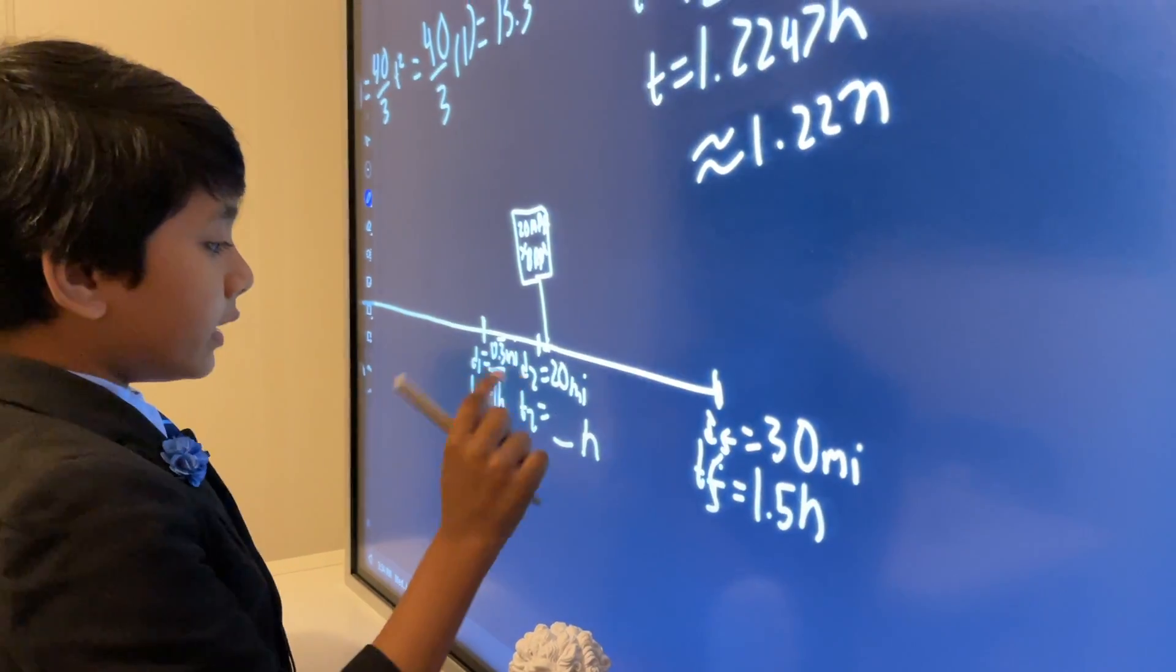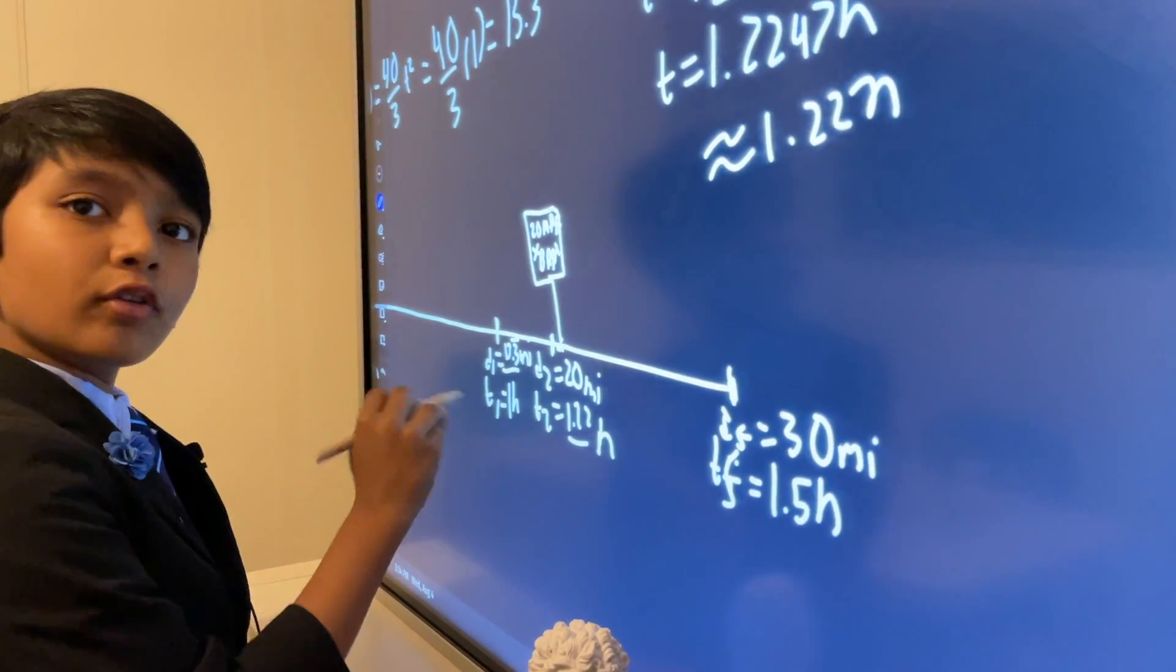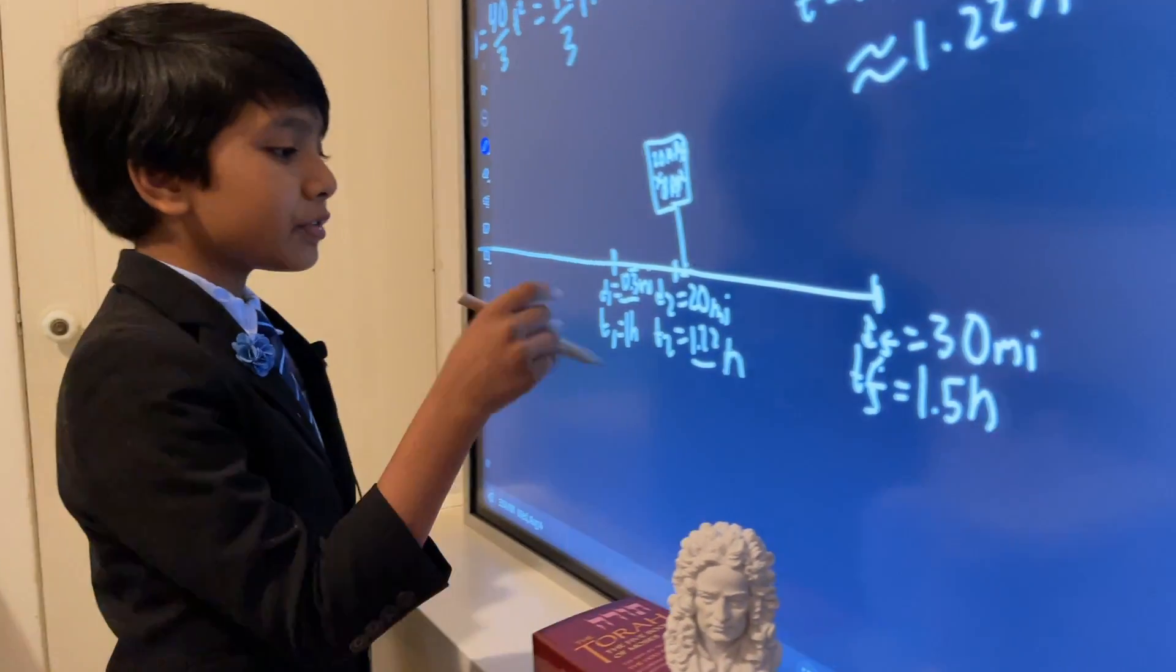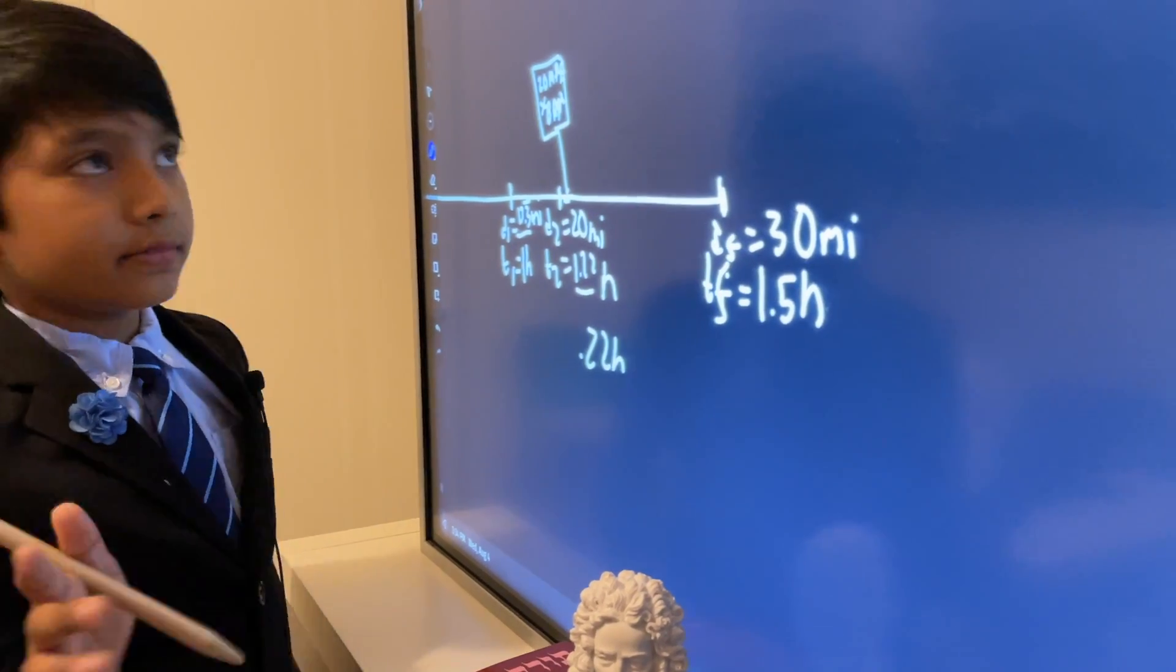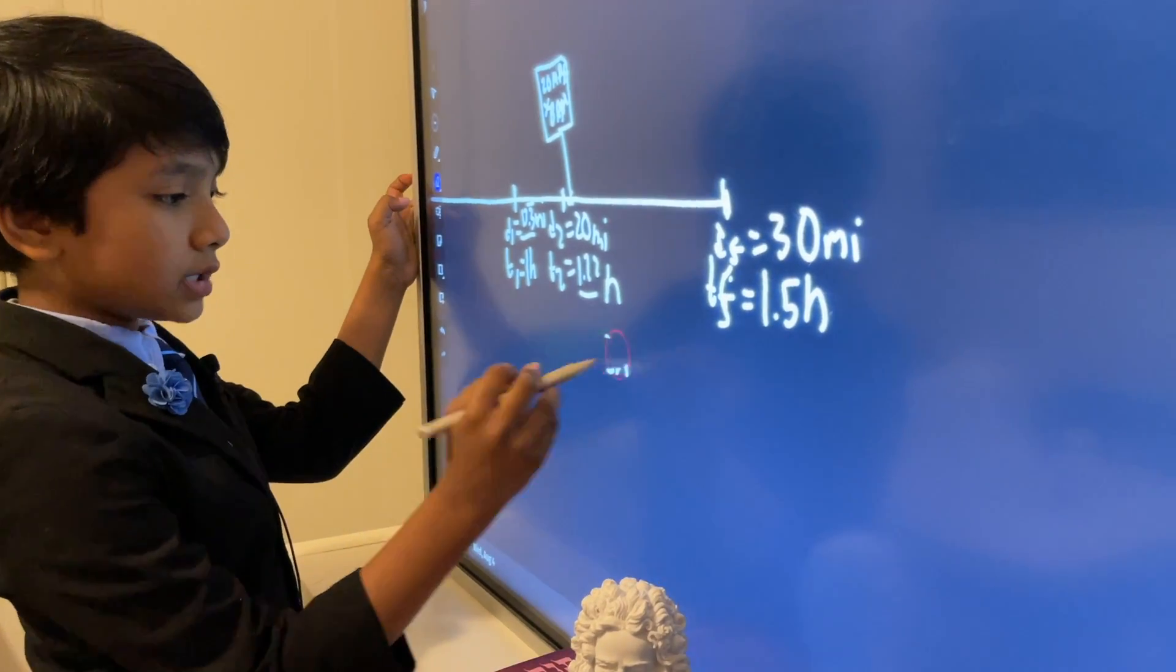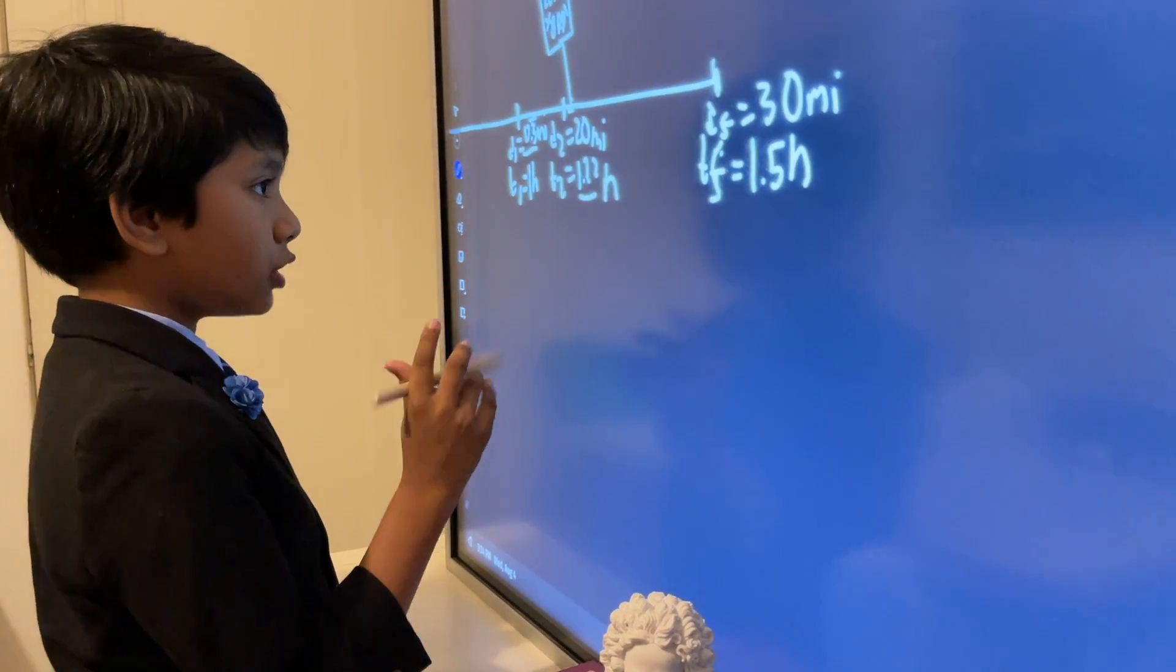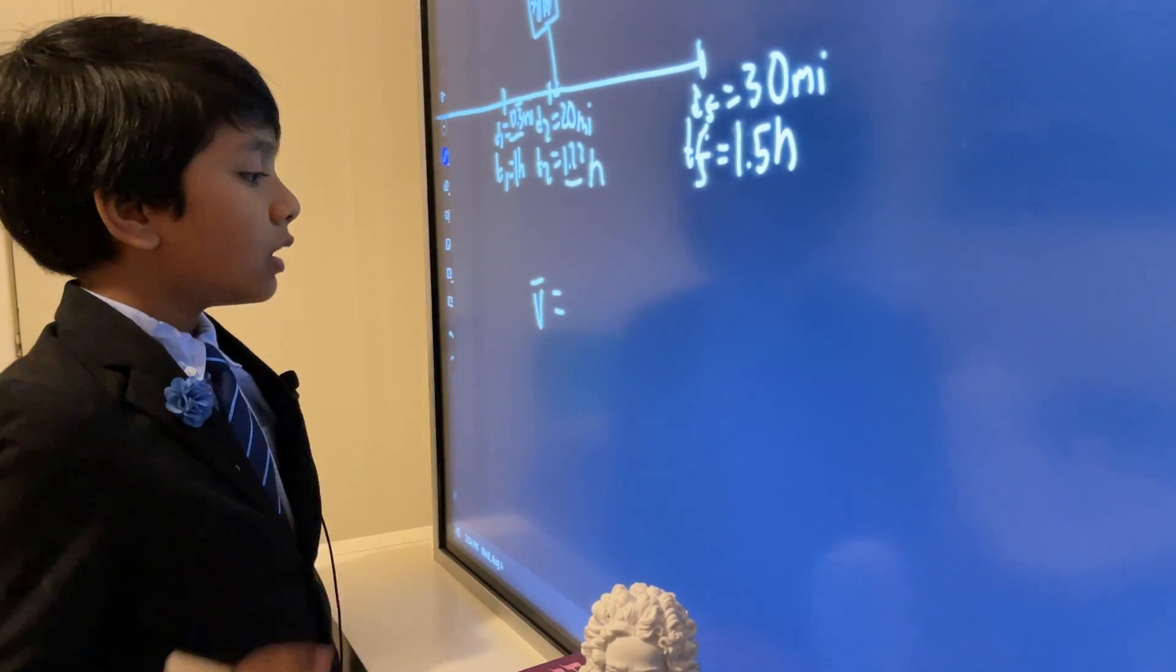So, we know that this was 1.22 hours in. So, thankfully, 1 hour was right before the sign. So, now, let's take the average velocity in this interval. Because it was only 0.22 hours, which is on a small scale for such a long trip.